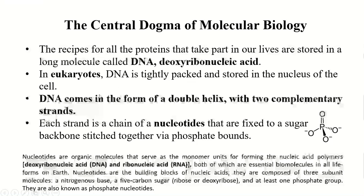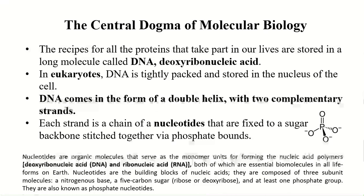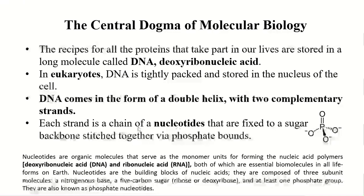In eukaryotes, DNA is tightly packed and stored in the nucleus of the cell. DNA comes in the form of a double helix. DNA is made of nucleotides, and nucleotides are the basis of DNA. That sequence will code for any gene — any particular trait of the organism — and with two complementary sequences, each strand is a chain of nucleotides, just as a protein is a chain of amino acids.